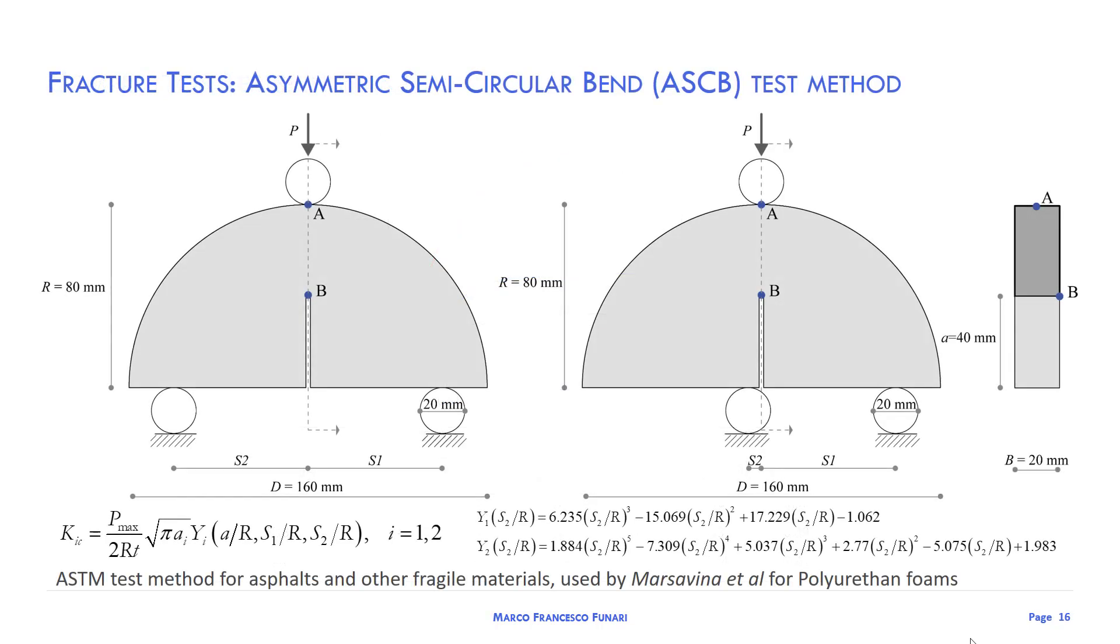Now let me talk about fracture tests. To detect the macro crack propagation in the core region, I need to know the fracture toughness of this material. Thus, the fracture toughness is evaluated by using a three-point bending test on a semicircular bending specimen. This setup allows us to simulate all ranges of mixed modes, ranging from pure mode 1 to pure mode 2, just by changing the position of the second support.